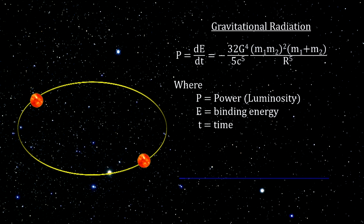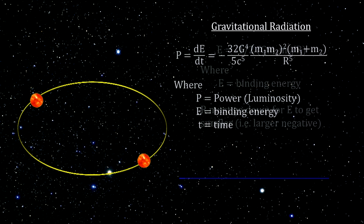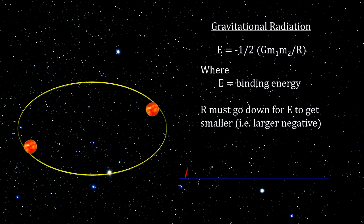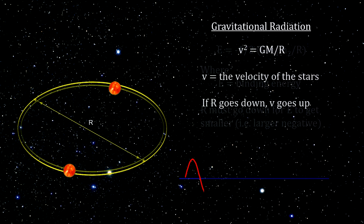Newton and Kepler provided the mechanics for understanding what happens to the orbit when gravitational energy is lost. Because binding energy is negative, a loss of energy will make it a larger negative. This has the effect of reducing the distance between the two objects.